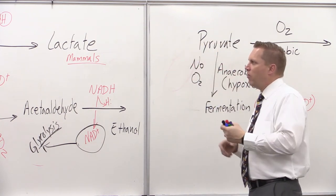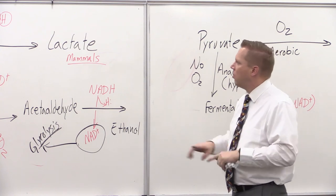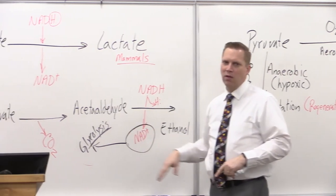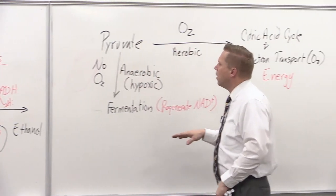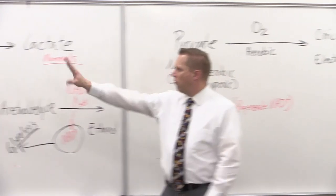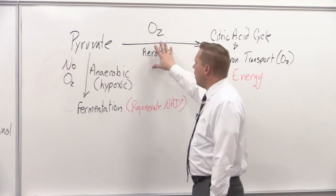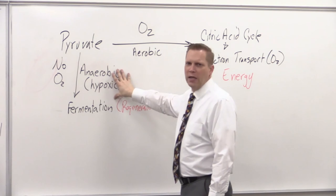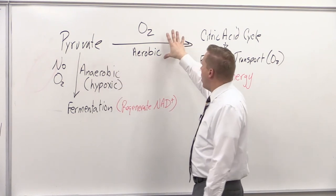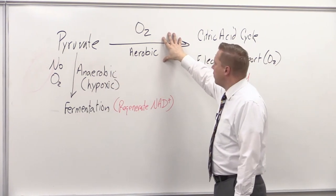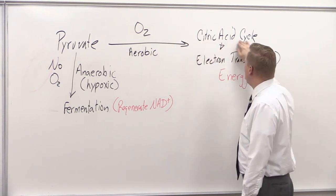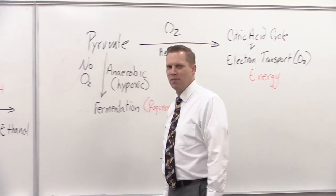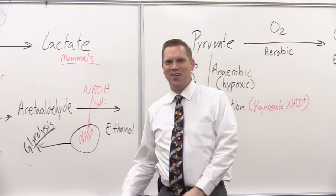In summary, we've gone over glycolysis steps, fermentation, substrate-level versus oxidative phosphorylation, and aerobic versus anaerobic respiration. In our next lecture video, we'll move on to the aerobic route and look at the citric acid cycle.